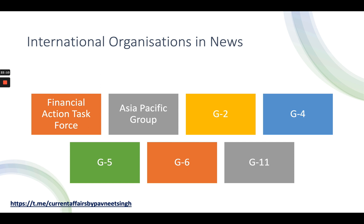G5 is an informal forum that was conceptualized in the year 1974. It is a very old informal forum formed by India, China, Brazil, Mexico and South Africa. Way back in 1974, these five countries created this informal forum for undertaking discussions. The most crucial discussions under the umbrella of G5 were related to developmental aspects in the 1970s.